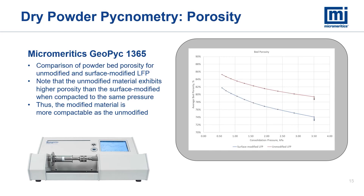Comparing the two materials — the original unmodified LFP shown in red and the surface-modified LFP shown in blue — we can see that the unmodified material exhibits a higher porosity at each compaction pressure. Thus the LFP is more compactable after surface treatment than before.